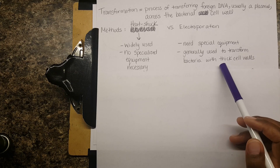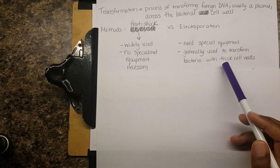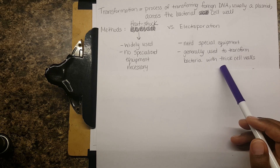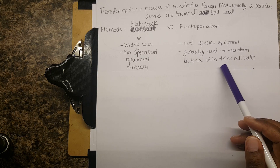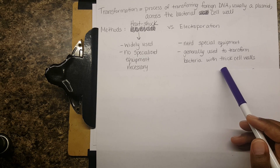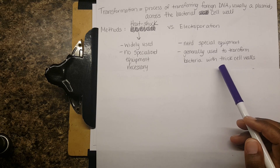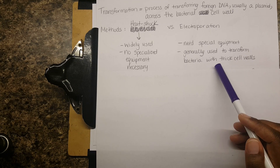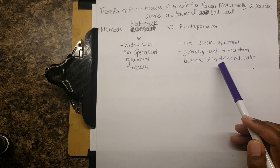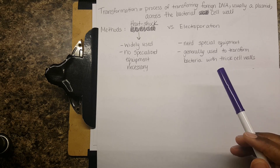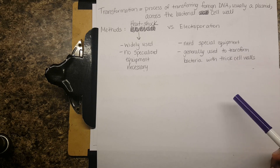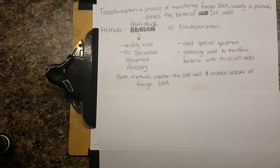Electroporation requires special equipment and a special chamber. You don't jump to electroporation unless you have bacteria with particularly thick cell walls — for example, Mycobacterium tuberculosis, whose cell wall is remarkable. Heat shock isn't enough for those bacteria, so you need electroporation, which is a heavier tool — like a jackhammer compared to a drill. Either way, you're weakening the cell wall and increasing uptake of your foreign DNA.